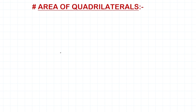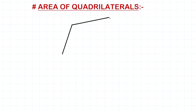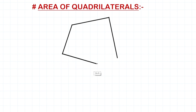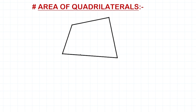First, what is a quadrilateral? A quadrilateral is a closed figure made up of four straight lines. It's not necessary that these lines need to be parallel or equal or anything like that. They just need to be made up of four straight lines and it needs to be a closed figure.